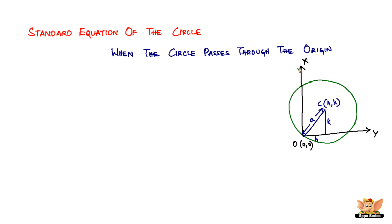Here we have the x-y axis, and we know that the point where the x and y axes meet is the origin with coordinate (0, 0). So what if the circumference of the circle passes through that point — that's exactly what's happening here. The moving point is P, and if P passes through the origin, its coordinates become (0, 0). The distance between center C and point P is denoted by a, which is the radius, and h, k are the coordinates of the center — h on the x-axis and k on the y-axis.